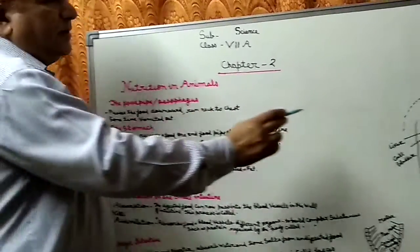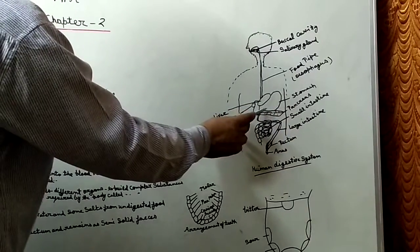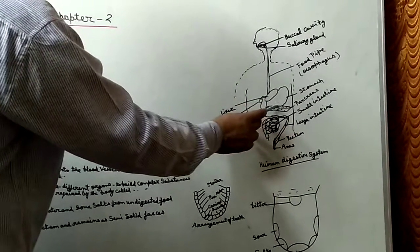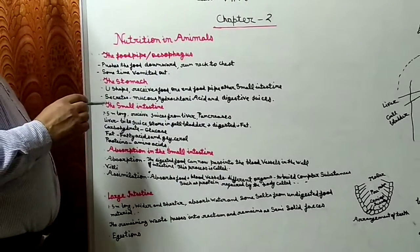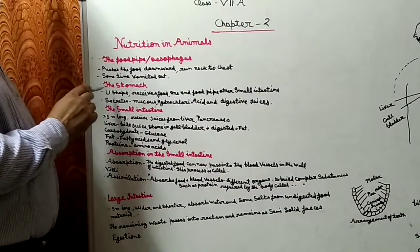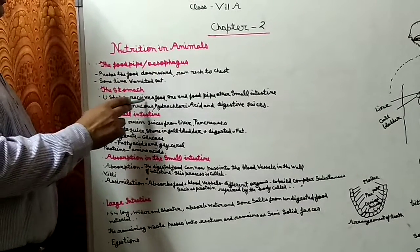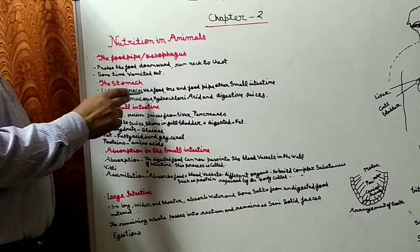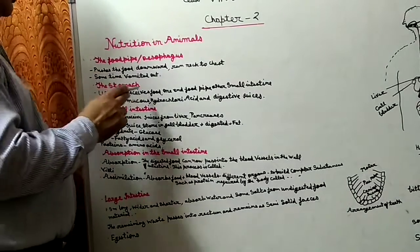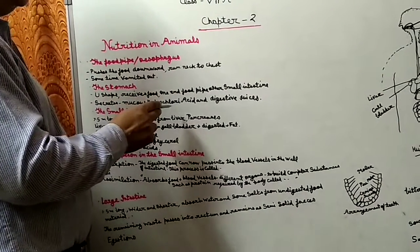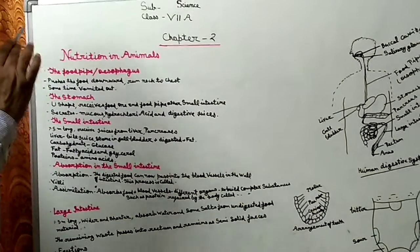Next is the stomach - ishtamak. See here, this structure is the stomach. This is the widest part. Ishtamak ka jodha hai food pipe se, aur doosra sar jodha hota hai small intestine se. Stomach function kya hai - its secretions.